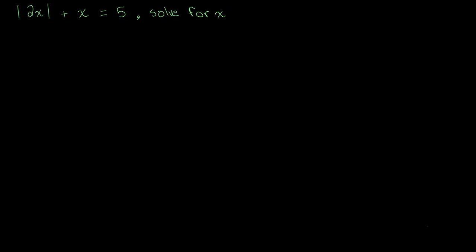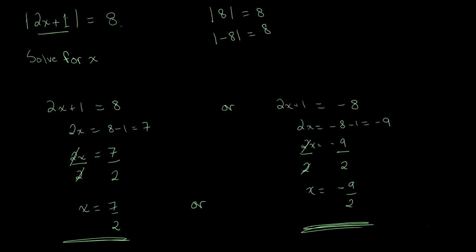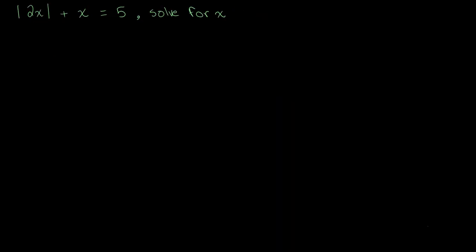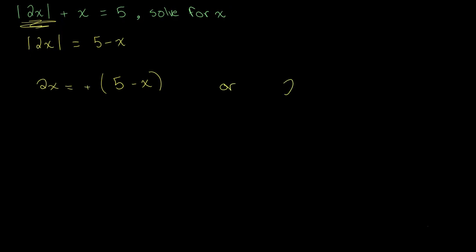Let's look at another example: the modulus of 2x plus x equals 5. The key difference here is that we are only taking the absolute value of 2x — the x outside is not inside the absolute value. So the first step is to isolate the absolute value: the absolute value of 2x equals 5 minus x. This gives us two cases: 2x equals positive 5 minus x, or 2x equals negative 5 minus x.